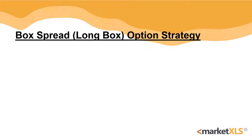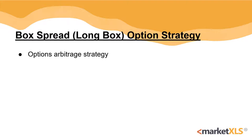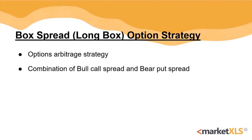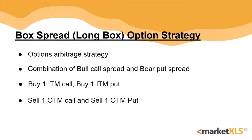A Box Spread, commonly known as the Long Box Strategy, is an options arbitrage strategy that combines buying a bull call spread with a matching bear put spread. In order to execute this strategy, you would buy one in-the-money call and one in-the-money put option, and sell one out-of-the-money call and one out-of-the-money put option, thus creating a box spread.